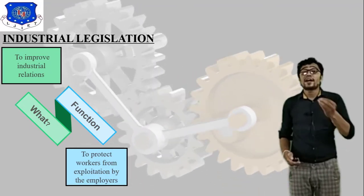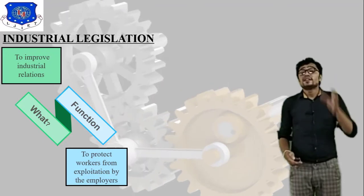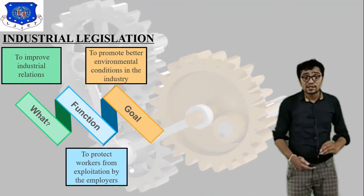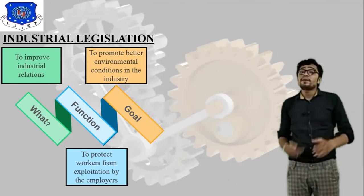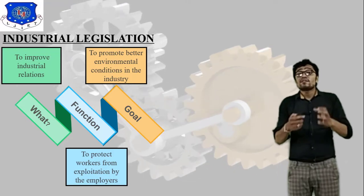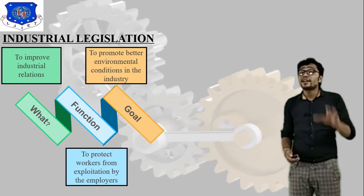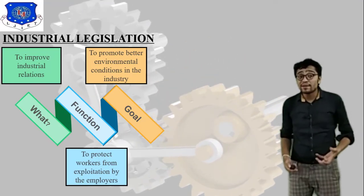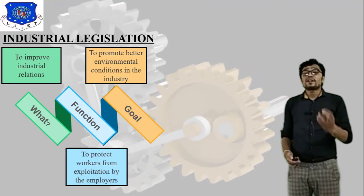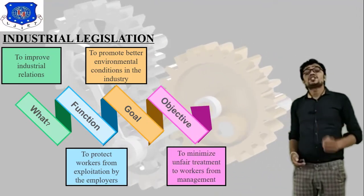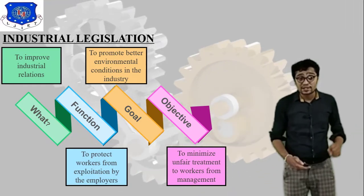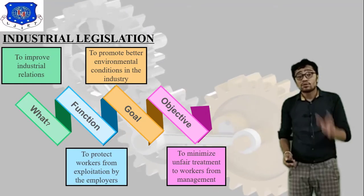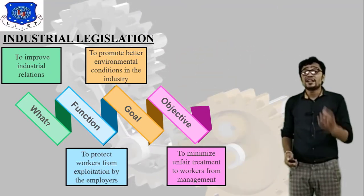Industrial Legislation is related to Industrial Acts and fundamentals followed by each and every industry, whether a small factory or an MNC company. The goal is to promote better environmental conditions in the industry, ultimately improving productivity and profit. The objective is to minimize unfair treatment to the worker from management.